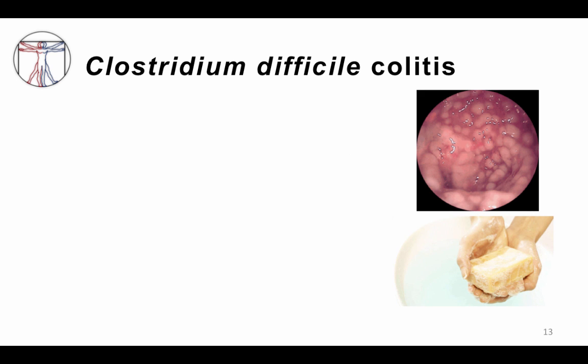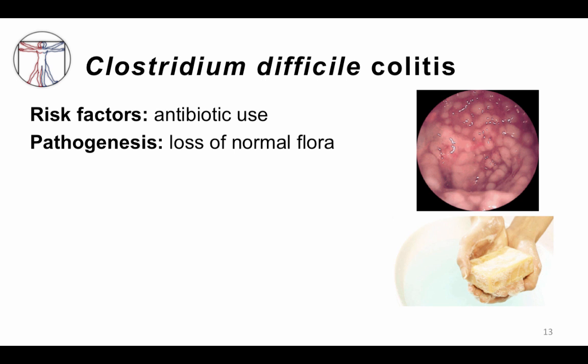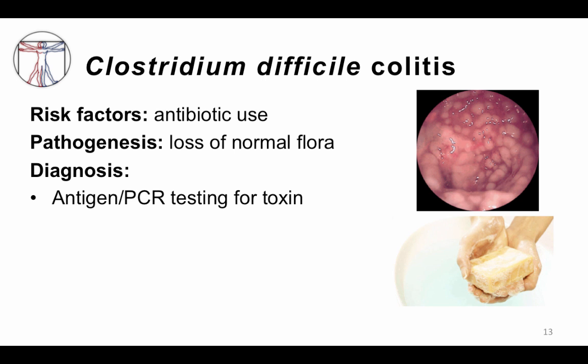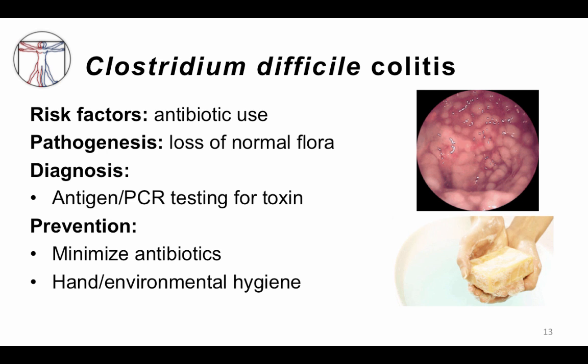Clostridium difficile colitis is a gram-positive rod. The primary risk factor is antibiotic use, because normal flora usually inhibits the growth of C. difficile. However, when antibiotics kill off much of the normal flora, C. difficile can proliferate, produce toxin, and cause infection. Diagnosis is by testing for antigen and PCR testing for the toxin. Prevention is to minimize antibiotic use and maintain good hand and environmental hygiene to prevent spread of the organism from patient to patient.